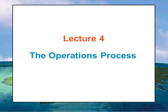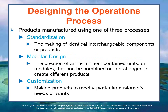Let's talk in more detail about the operations process. Before a firm can begin production, it has to determine the appropriate method to use to transform the input resources into the output of the desired product. Often, consumers' specific needs and desires dictate a process. A company must then determine the appropriate method for transforming resources into the desired product. Typically, products are manufactured using one of three processes: standardization, modular design, or customization.